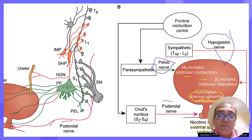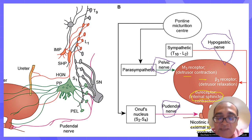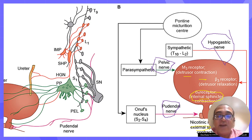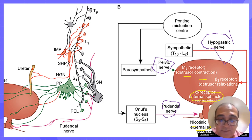Finally, there is the pudendal nerve, which exerts voluntary control — meaning through our own will we can control the external sphincter and choose the time and place where one wants to pass urine. The pelvic nerve controls contraction of the bladder, and the sympathetic nerve controls filling of the bladder.